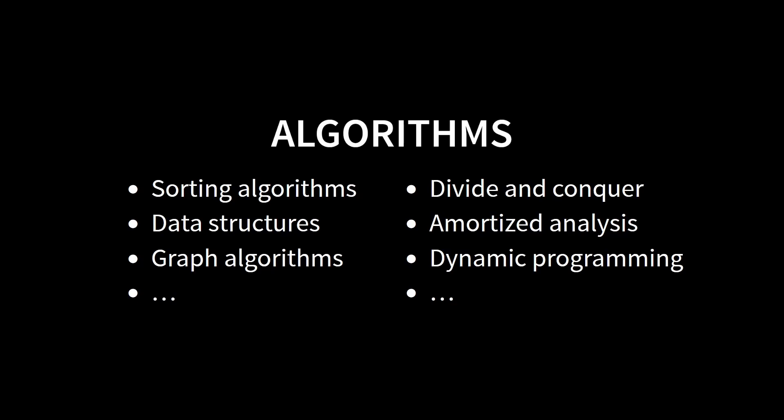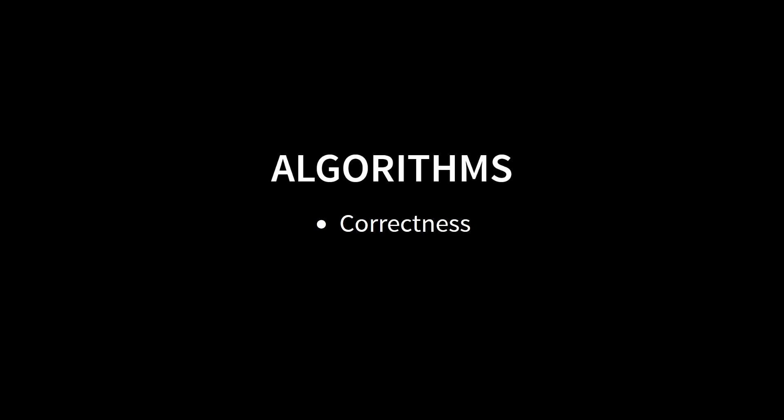When we look at a certain algorithm — for example one that finds the shortest path through a maze — we are usually interested in two aspects. First, does the algorithm actually work correctly? This might seem obvious, but often it's not easy to verify. For example, how can I be sure that my algorithm always gives me the shortest path, and that there cannot be an even shorter one? And the second aspect is the usage of resources. This typically means two things: first, how much time does my algorithm need, and second, how much memory?